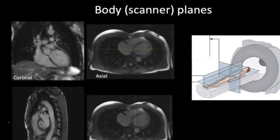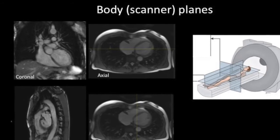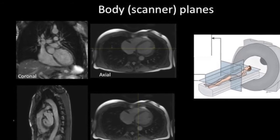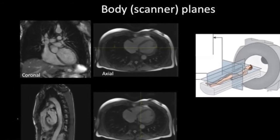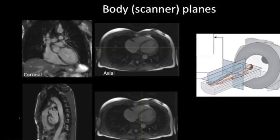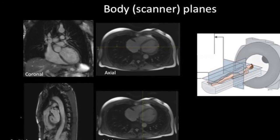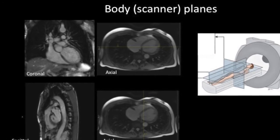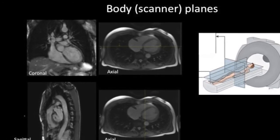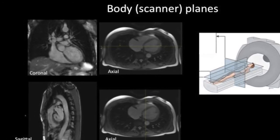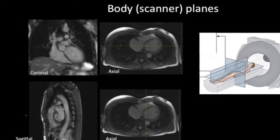However, the obliquity of these planes to the walls of the heart precludes accurate anatomic and functional characterization. Rather, such information should be obtained from the specialized cardiac planes.